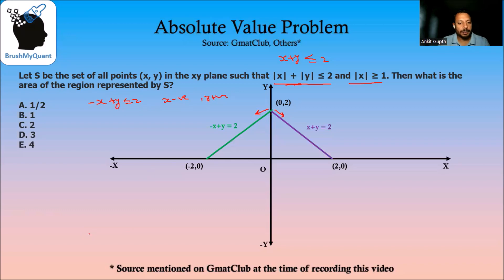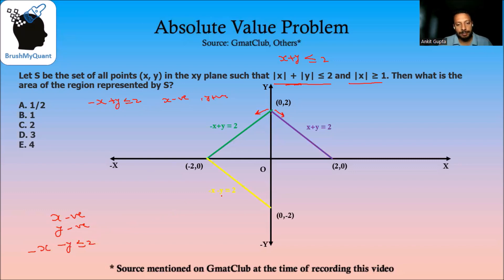Similarly, in the third quadrant, x is negative and y is also negative, so we can open the absolute value as -x - y ≤ 2. We draw the line -x - y = 2, and since this is less than equal to 2, it will be in this direction.